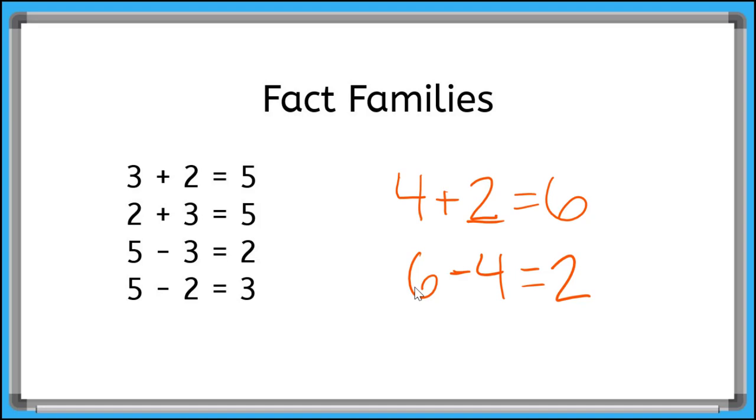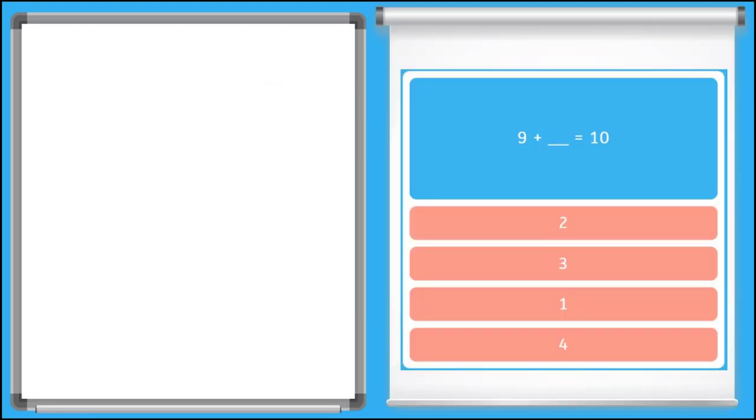Now, let's go try this with some of the problems from our unknown numbers game. Okay, here I have the problem 9 plus an unknown equals 10. So remember, I want to take this sum here, 10, and then I'm going to subtract the number I do know, 9, and that equals 10 minus 9 equals 1.